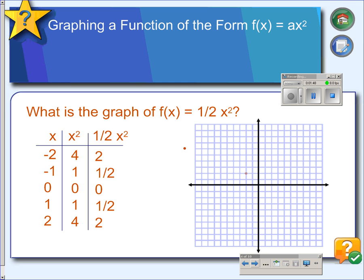When x is negative 1, y is a half. When x is 0, we get 0. And then we have our symmetric points on the right side of the graph. And we can draw the curve through these points.